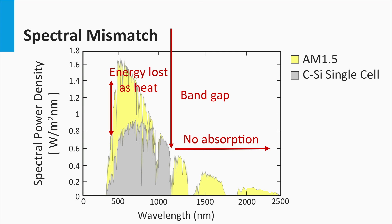Both loss processes — heating and non-absorption — depend on the band gap. The higher the band gap, the smaller the losses due to heat, but the larger the energy losses below the band gap. The smaller the band gap, the larger the losses due to heat, whereas the energy losses below the band gap decrease. This suggests that if we only consider the optical losses and ignore all other losses, we will have an optimum. The optical losses due to this mismatch between the band gap and the solar spectrum limit the maximum conversion efficiency to 48%.